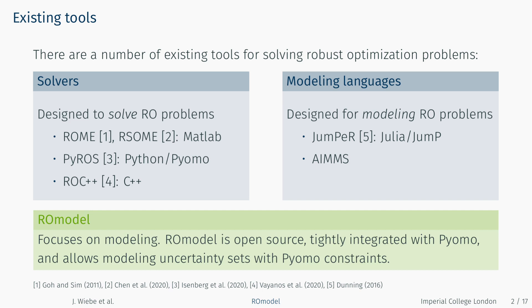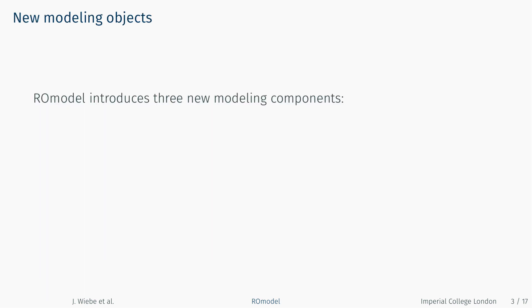Roamodel falls into the modeling-focused category. It is largely focused on modeling robust optimization problems, is tightly integrated with PyOMO, and allows modeling of robust optimization problems in a way that is very intuitive and close to the mathematical formulation. Roamodel is also open source, extensible, and allows modeling arbitrary convex uncertainty sets using nothing but PyOMO constraints. To achieve this, Roamodel introduces three new modeling components.